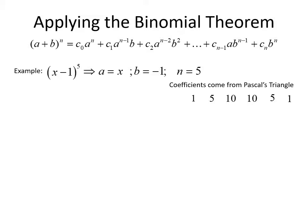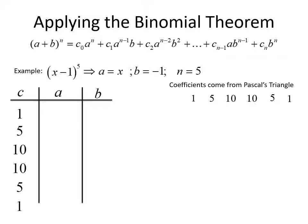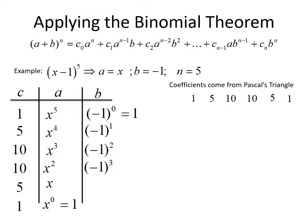We create a table with columns for coefficients, a terms, and b terms. Our coefficients from Pascal's triangle are 1, 5, 10, 10, 5, and 1. Our a term starts with the first term x at the full power of 5, then decreases: x to the fifth, x to the fourth, x cubed, x squared, x, and 1 (since x to the zero equals 1). For our b term, that's negative 1, and we start with the power of 0 — negative 1 to the zero gives us 1 — then increase the power: negative 1 to the 1st, negative 1 squared, negative 1 cubed, negative 1 to the fourth, negative 1 to the fifth.